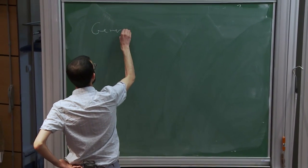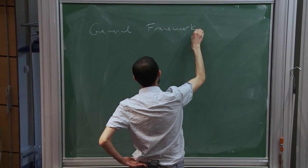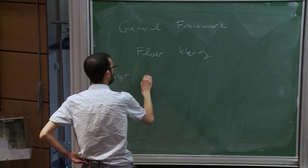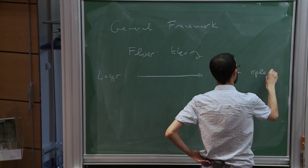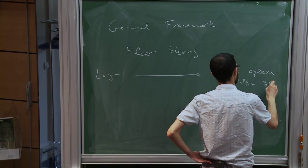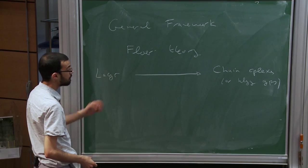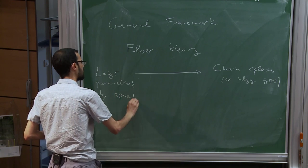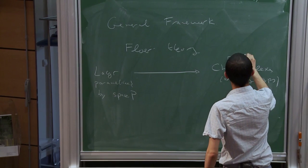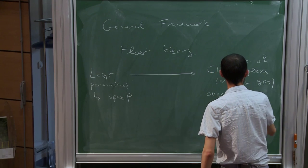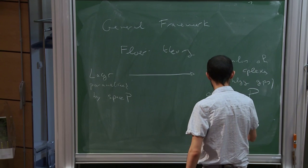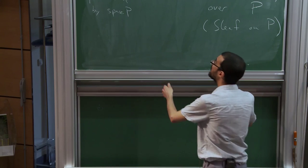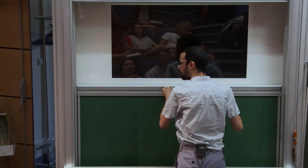The general framework is that Floer theory takes Lagrangians to chain complexes, or maybe their homology groups. What you want to say is that if you have Lagrangians parametrized by some space — call that space P — then you will get families of chain complexes or homology groups over P. Such a thing is basically what is known as a sheaf. It turns out there are actually two completely different frameworks, or different kinds of sheaves, that come out of this idea.